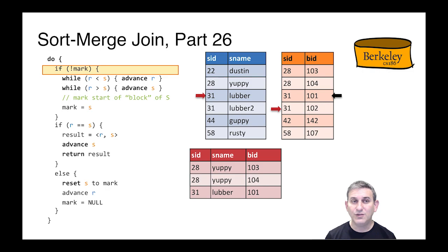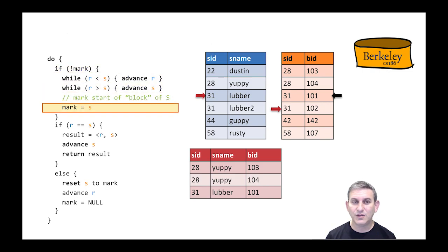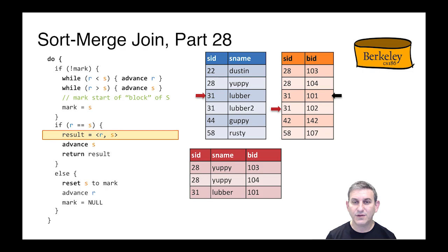On the next call to next, we check for the mark. We find it. So we go back into checking to see if there's another match. There is another match. We advance S. We return the result.